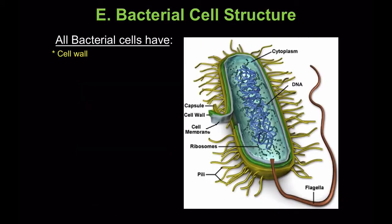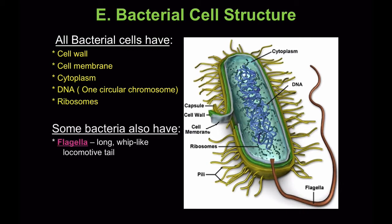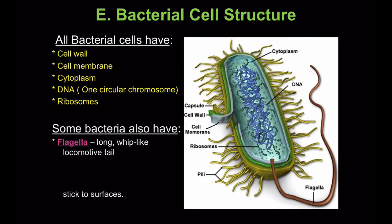All bacteria cells have a cell wall, cell membrane, cytoplasm, DNA, and one circular chromosome — even though in the diagram the DNA looks twisted, it is circular. They also have ribosomes, which make proteins. Some bacteria also have flagella, a long whip-like locomotion tail; pili, which can be used to exchange DNA between cells and help bacteria stick to surfaces; and a capsule, a protective layer of polysaccharides like a starchy sugar outside the cell wall.